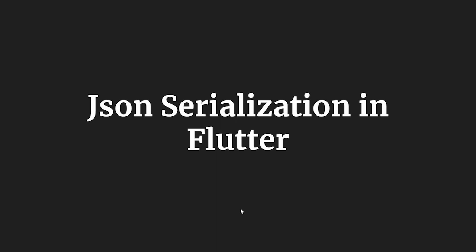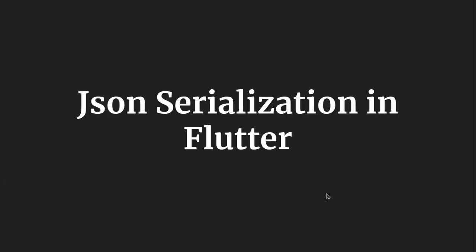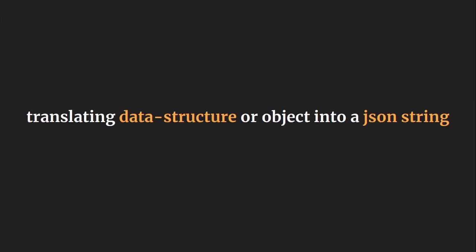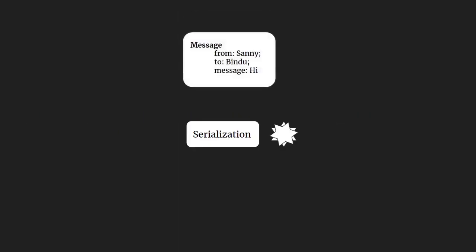And Sani is here to clear all my doubts. So Sani, are we ready? Yes, we are. The first thing I want to know is: what is serialization and why do we need it? To put it in a simple way, serialization is just the process of translating your data structure or object into a JSON string. As you can see in this figure, we have an object called message.